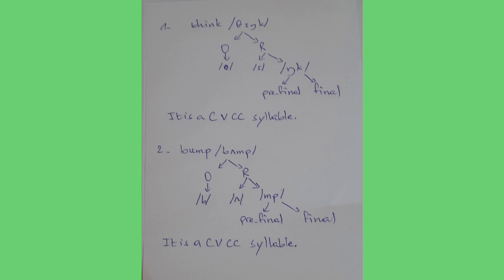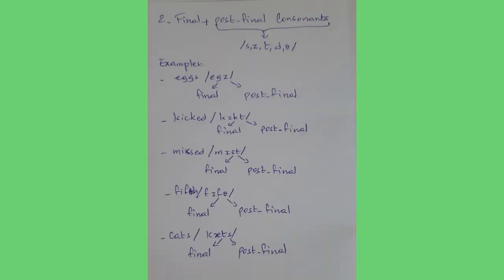Now let's move to the second kind of final two consonant clusters: final plus post-final. Post-final is one of /s/, /z/, /t/, /d/, or /θ/. Examples: the word 'eggs' — the word 'egg' ends in /g/, and when it is plural we add -s, pronounced /z/. So /g/ is final and /z/ is post-final. Similarly, in 'kicked', /k/ is final and /t/ is post-final.